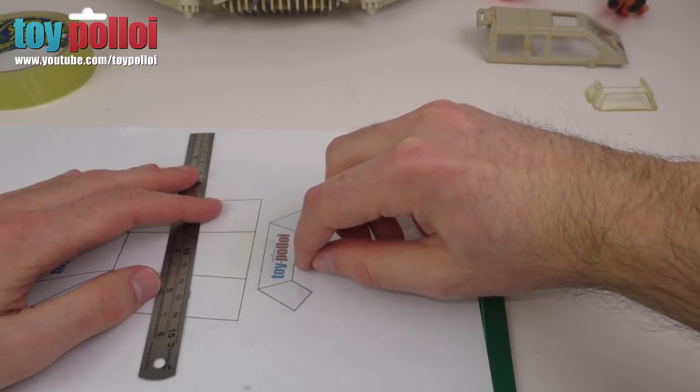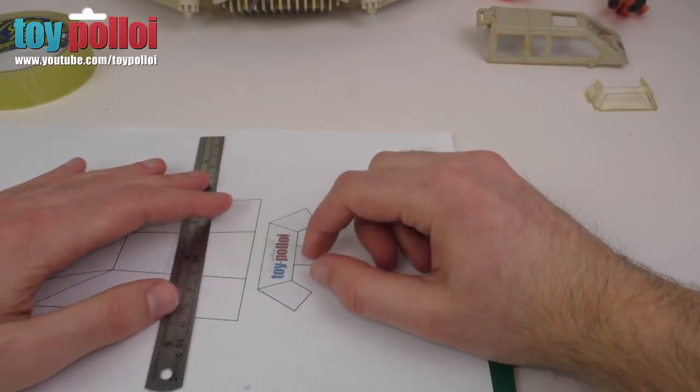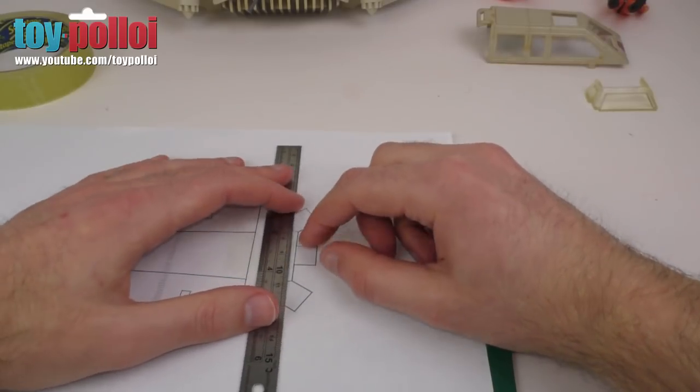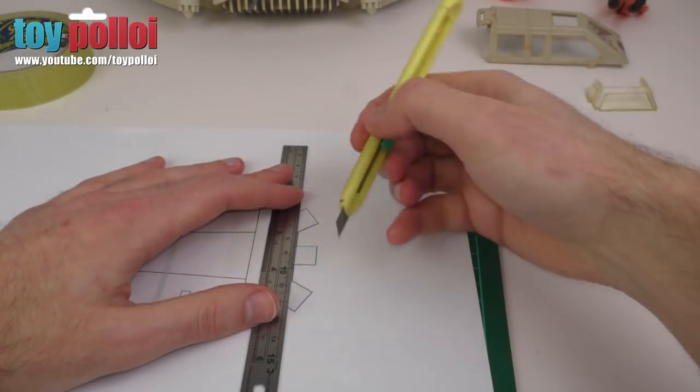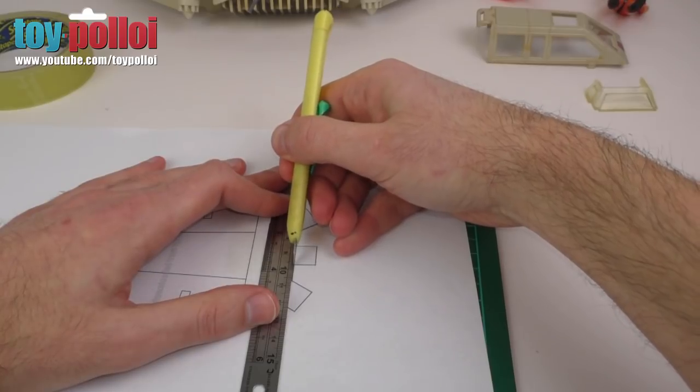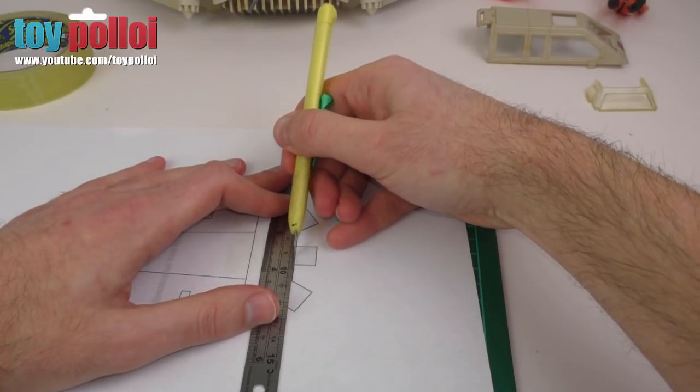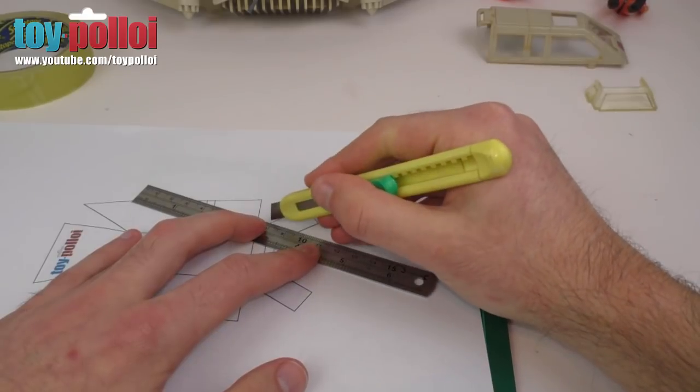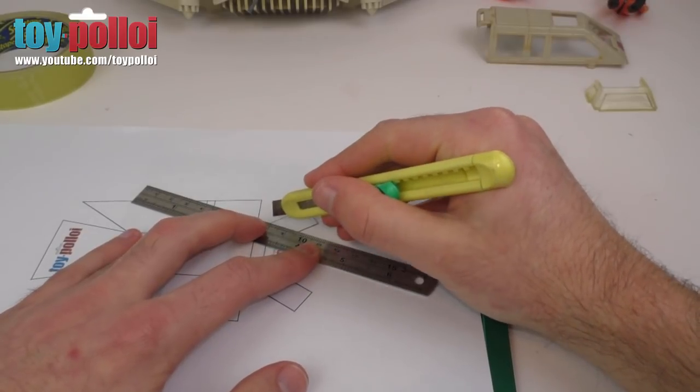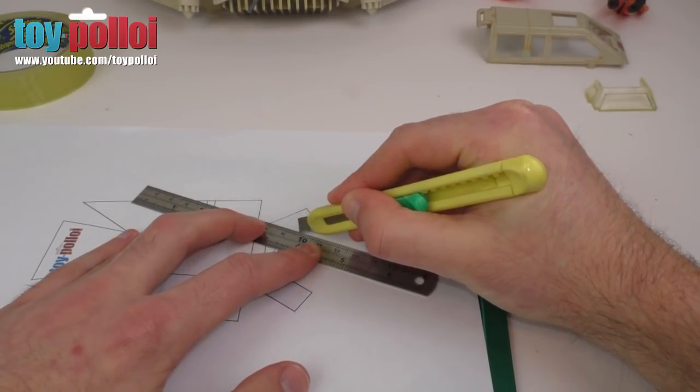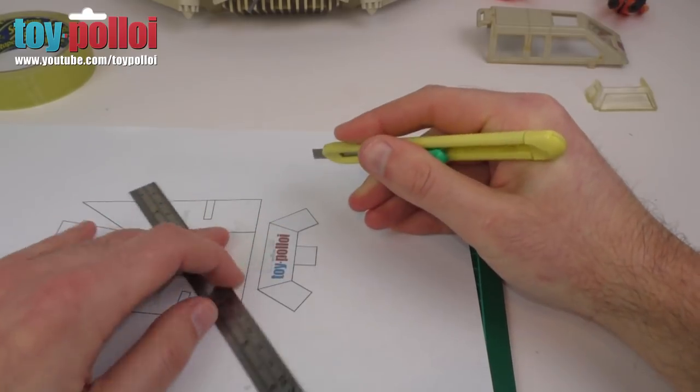This is where we're going to attach the glass to the inside of the cockpit. We just want to score that as well. You know, you don't cut through this, it's just a gentle score, because a small score will make the acetate very easy to bend, whereas if you cut too much you're going to cut these off. So it's just a light score with the edge of the blade.